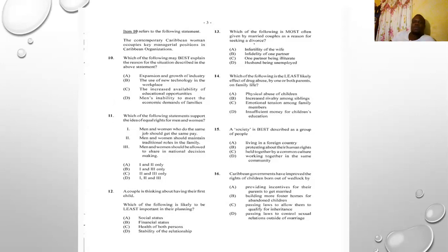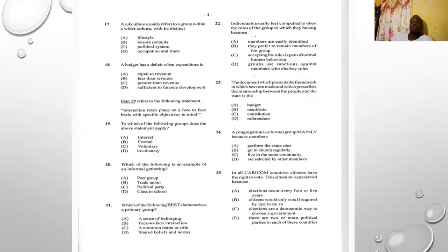Number sixteen: Caribbean governments have improved the rights of children born out of wedlock. Is it A) providing incentives for parents to get married, B) building more foster homes for abandoned children, C) passing laws to allow them to qualify for inheritance, D) passing laws to control sexual relations outside of marriage? The answer is C — passing laws to allow them to qualify for inheritance.